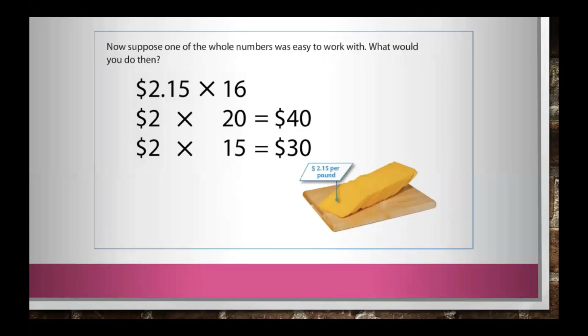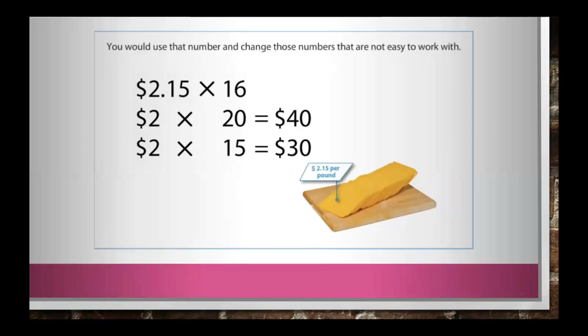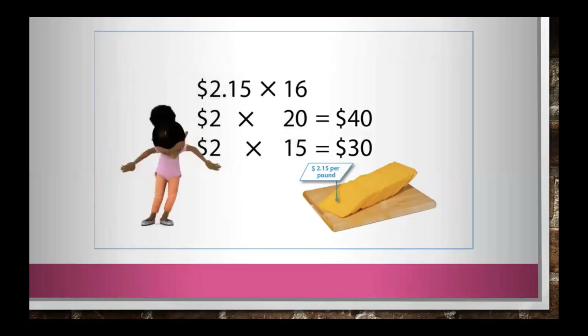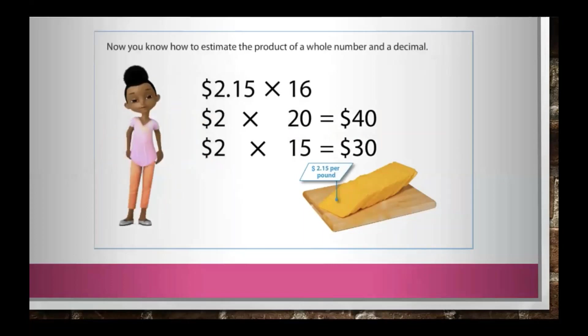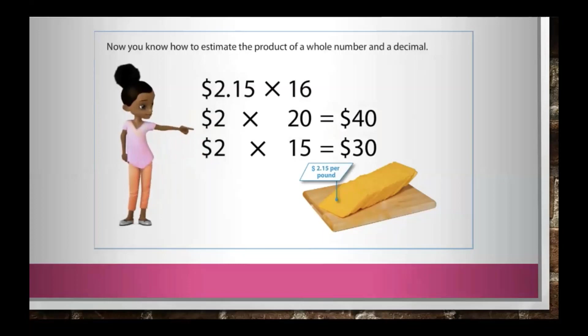Now, suppose one of the whole numbers was easy to work with — what would you do then? You would use that number and change the numbers that are not easy to work with. Now you know how to estimate the product of a whole number and a decimal.